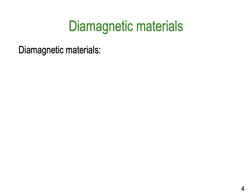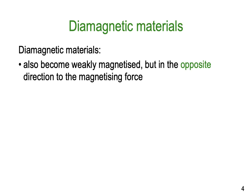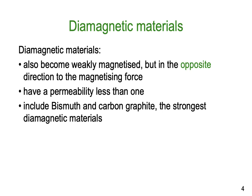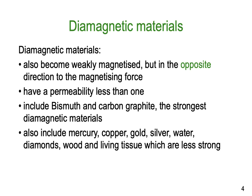Diamagnetic materials also become weakly magnetized but in the opposite direction to the magnetizing force — hence the prefix 'dia' meaning opposite. They have a permeability of less than one. They include bismuth, carbon, graphite, mercury, copper, gold, silver, water, diamonds, wood, and living tissue. When a magnetic force is brought near them, it actually reverses and goes in the opposite direction.